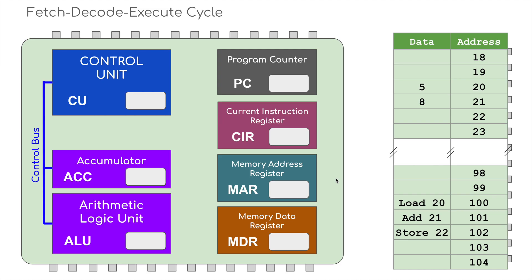Let's have a look at this inside the CPU. I've got the CPU here containing the control unit, the accumulator, and the arithmetic logic unit — these work in tandem with each other as part of the ALU. We've got the program counter (PC), the current instruction register (CIR), the memory address register (MAR), and the memory data register (MDR). On this side is the RAM, with all the addresses and the data stored at those particular addresses.